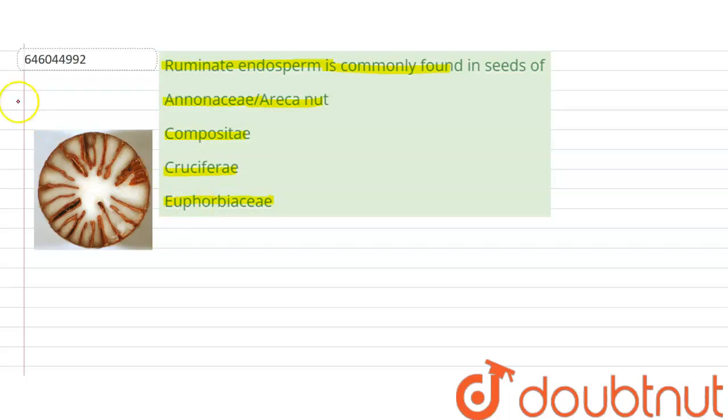So let's discuss a few characteristics of ruminate endosperm. It is the condition in which the endosperm is dissected by in-growths of the seed coat.